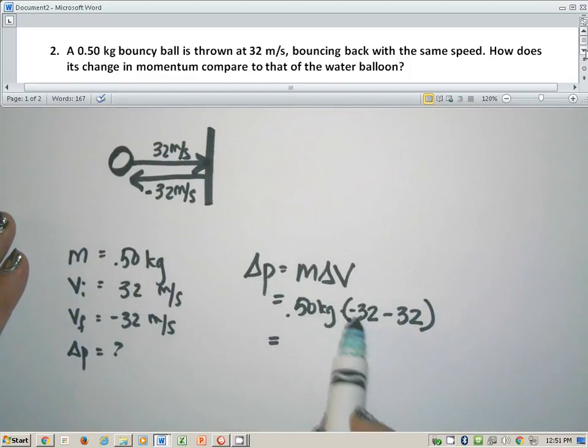If you don't make this number negative, you're going to end up with positive 32 minus 32, and you're going to end up with a momentum of zero. And if that ball bounces back off of the wall, there's no possible way it's got a momentum of zero. The only way you have a momentum of zero is if you have no velocity whatsoever and you know the ball does. So that should be a sign to you that something is wrong.